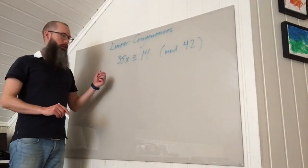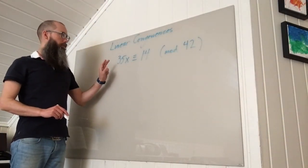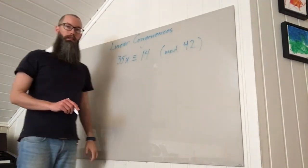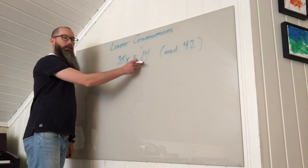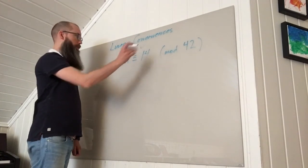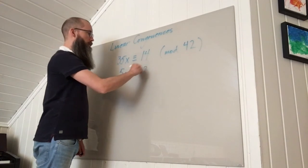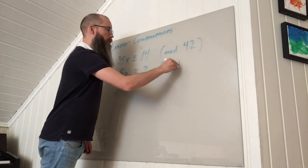I'm going to solve this congruence. If we look at the greatest common divisor of 35 and 42, that is 7, and 7 divides 14. So I can divide through by 7, giving 5x congruent to 2 mod 6.